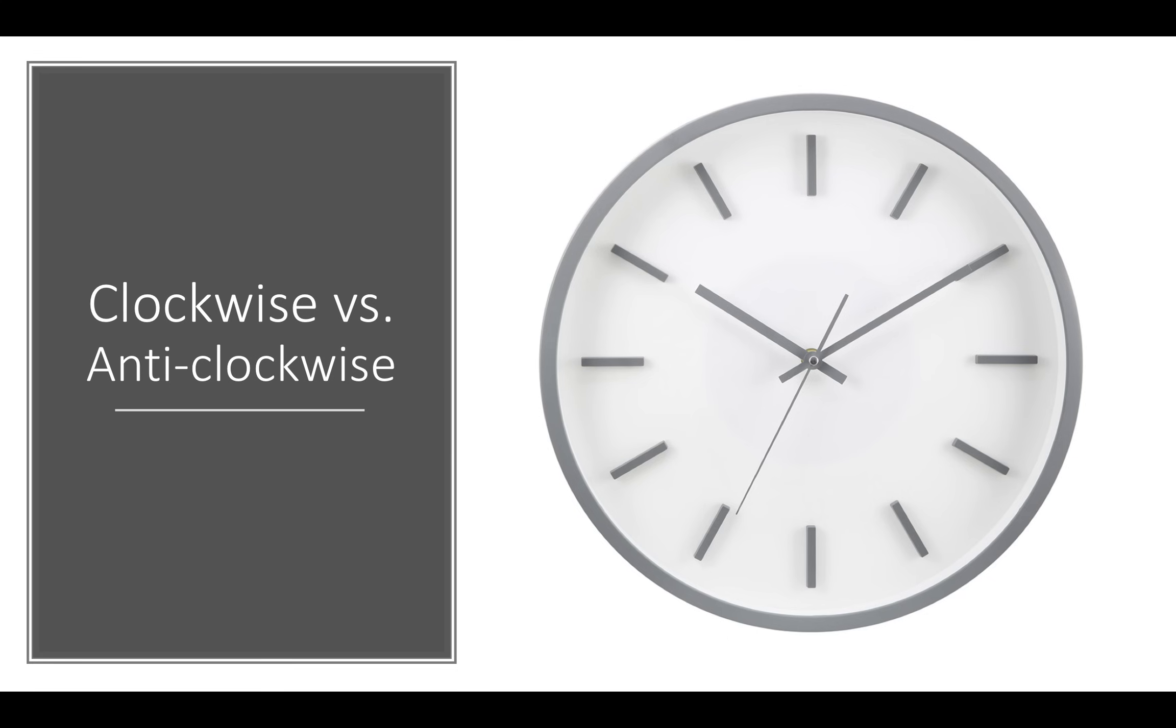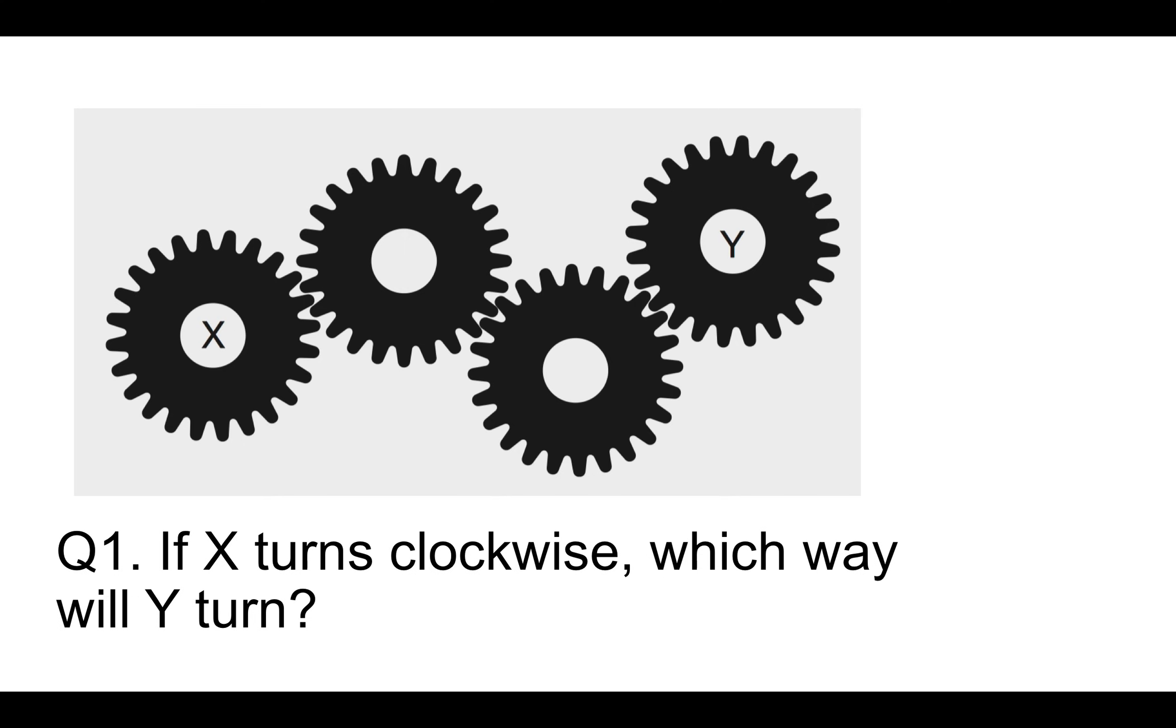The best way to learn clockwise versus anti-clockwise is to just picture a clock and think which way the hands turn. Now the hands turn that way, which is clockwise. And if it goes anti-clockwise, then they're going the other way. So if you are unsure about clockwise versus anti-clockwise, then just picture a clock and clockwise is the way the hands will turn and anti-clockwise is obviously the other way around.